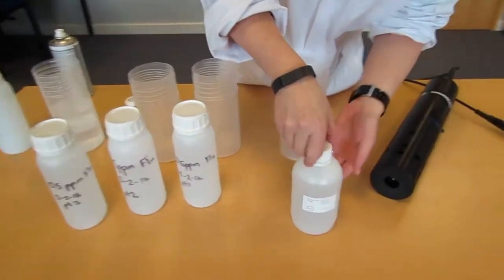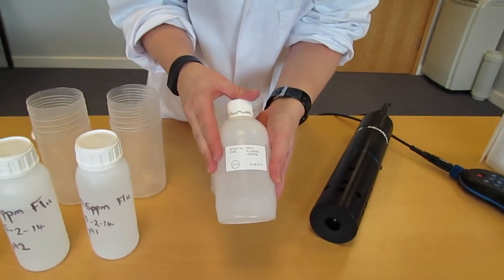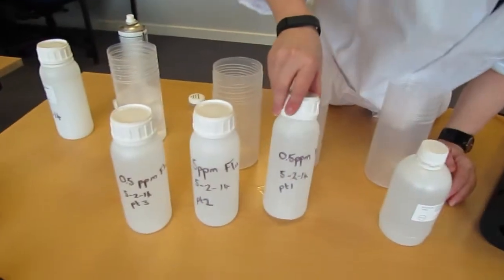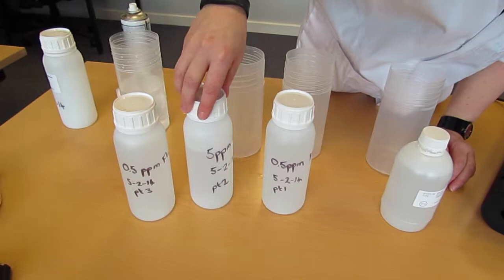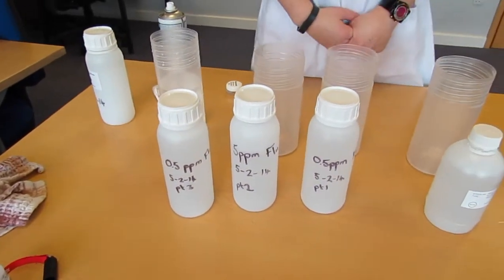Now for the calibration solutions, we use a stock of 1,000 parts per million of fluoride, which is then diluted down to 5 and 0.5 parts per million fluoride, as per the instructions in our manual.